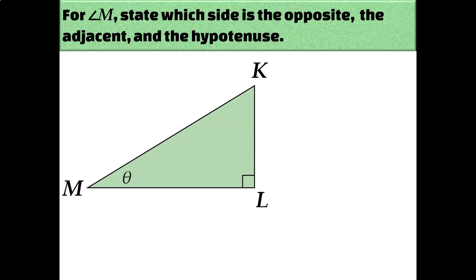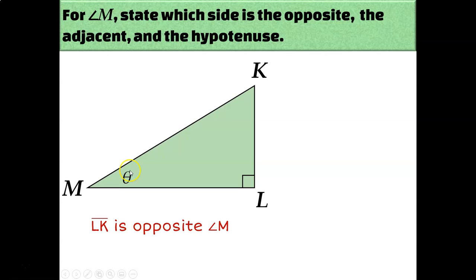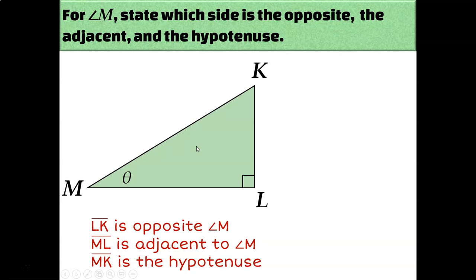Focusing on angle theta, or angle M, in this diagram: which side is opposite, which is adjacent, and which is the hypotenuse? The side on the other side of the triangle from angle theta is LK, so LK is the opposite side. Side ML is adjacent to angle theta because it's one of the sides that creates theta. The other side that creates theta is the hypotenuse, MK. You don't ever call the hypotenuse adjacent — the hypotenuse is always just the hypotenuse.